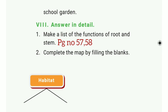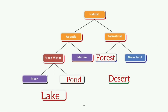Second question: Complete the map by filling in the plants. The answer includes fresh water land — pond, lake — and terrestrial — desert, forest, desert.